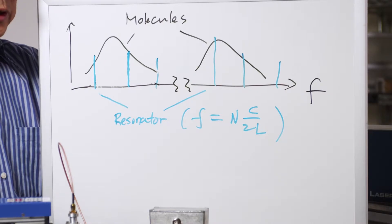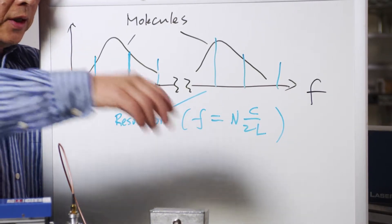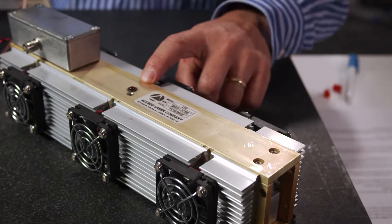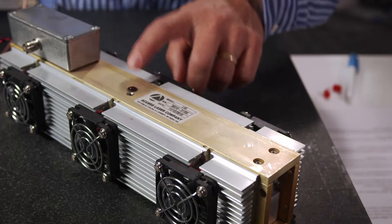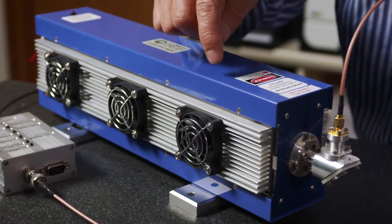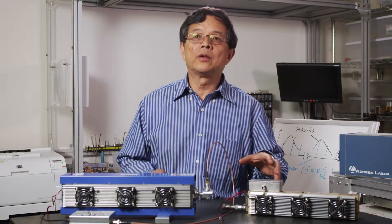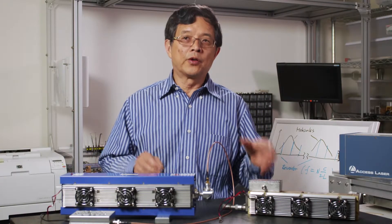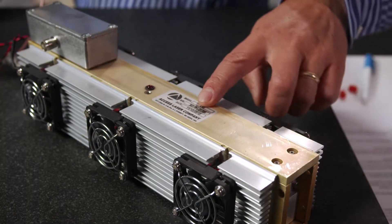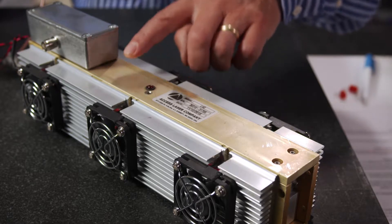In order to achieve the highest possible stability, we use an Invar structure, like in this laser. This laser has a gold-plated Invar structure, and in this other laser you do not see the Invar, but it's built in. Invar is a material that has a very low thermal expansion, so even when the temperature changes, it minimizes thermal expansion and contraction.